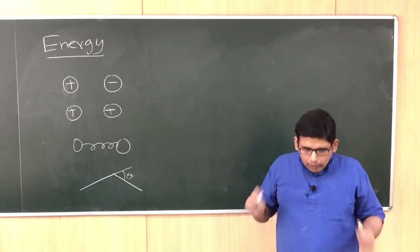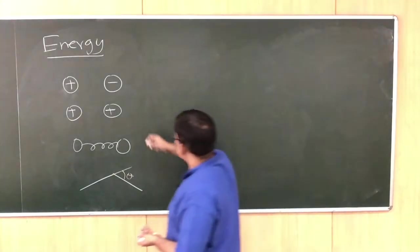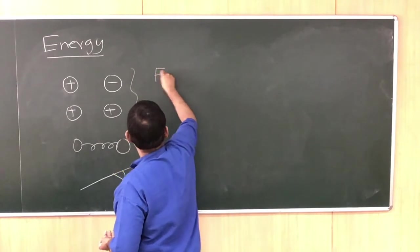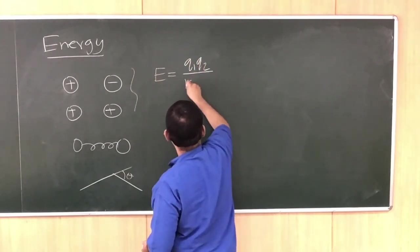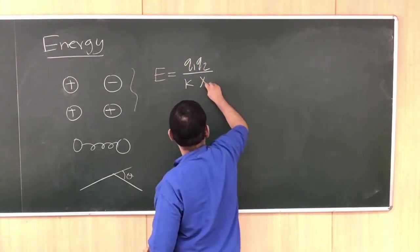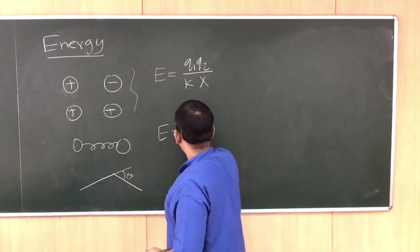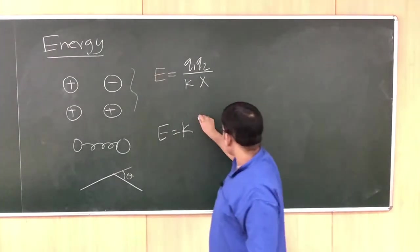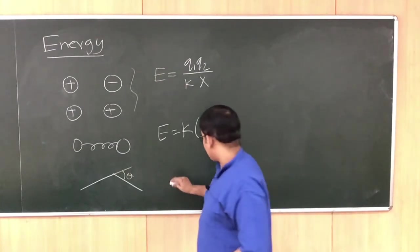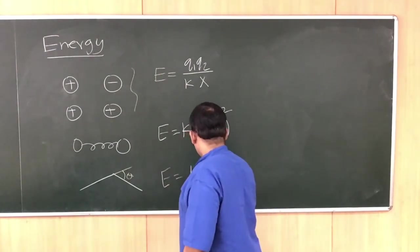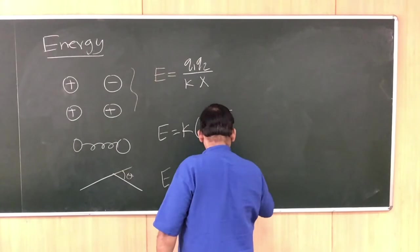Now, one question that naturally comes to your mind is: why are we studying all these energy functions? We learned some formulas for all these systems. We said that the energy E is the product of charges divided by x, which is the distance between those two charges. For the spring, the energy is some constant k times the distance squared. And for the bond angle, the energy is some constant times (1 minus cos of the angle theta).